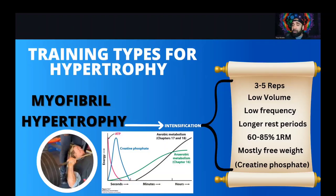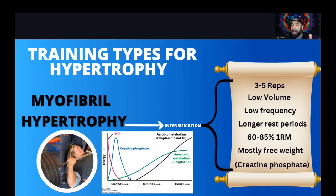The myofibrillar approach is probably the most important slide here. With myofibrillar training, we're looking at deep muscle fibers. The picture shows Mike O'Hearn — an older, mature lifter who lifts very heavy weights under great control. He's incline pressing 405 pounds at around 51 years old. Myofibrillar training is commonly defined as one to five reps, but I prefer three to five reps, with low volume, low frequency — meaning more recovery days — longer rest periods, and around 60 to 85% of one-rep max, mostly with free weights.